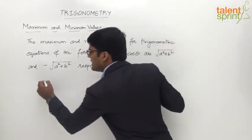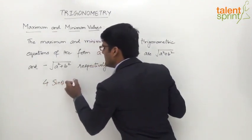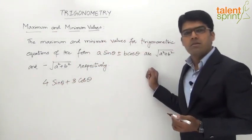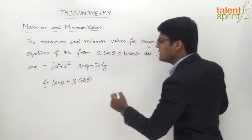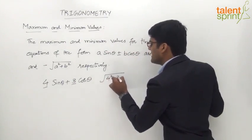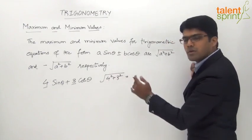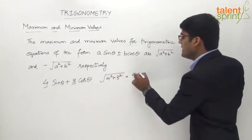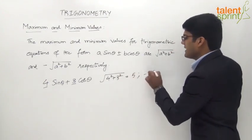For example, let us say the given equation is 4·sinθ + 3·cosθ. What would be the maximum value? Here a = 4 and b = 3. So the maximum value will be √(4² + 3²) = √(16 + 9) = √25 = 5. And the minimum value would be −√(4² + 3²) = −5.